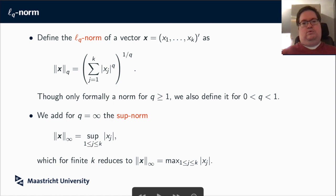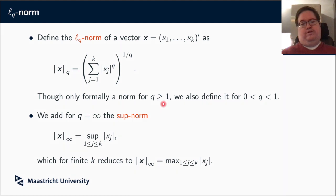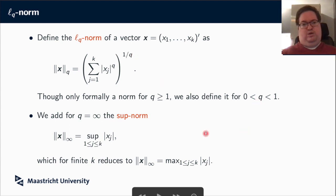Define the LQ norm of a vector X, which has K elements, as follows. We take the sum of the elements to the power Q, and then take the sum to the power 1 over Q. This is only a norm if Q is greater than or equal to 1. If Q is smaller or equal to 1, the triangle inequality is not satisfied, but we can still define a quantity also for Q smaller than 1 and calculate it for any Q.